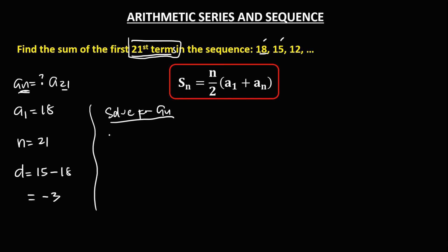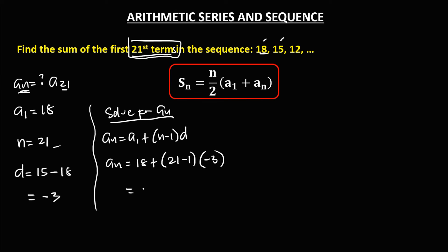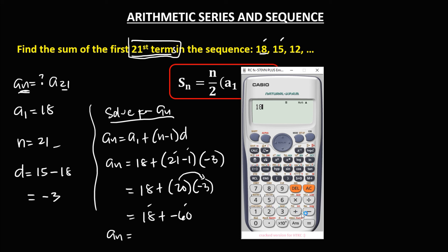To find a sub 21, using the formula a sub n equals a sub 1 plus (n minus 1) times d: that's 18 plus (21 minus 1) times negative 3, which is 18 plus 20 times negative 3. That gives 18 plus negative 60, so a sub 21 equals 18 minus 60, which equals negative 42. The last term is negative 42.